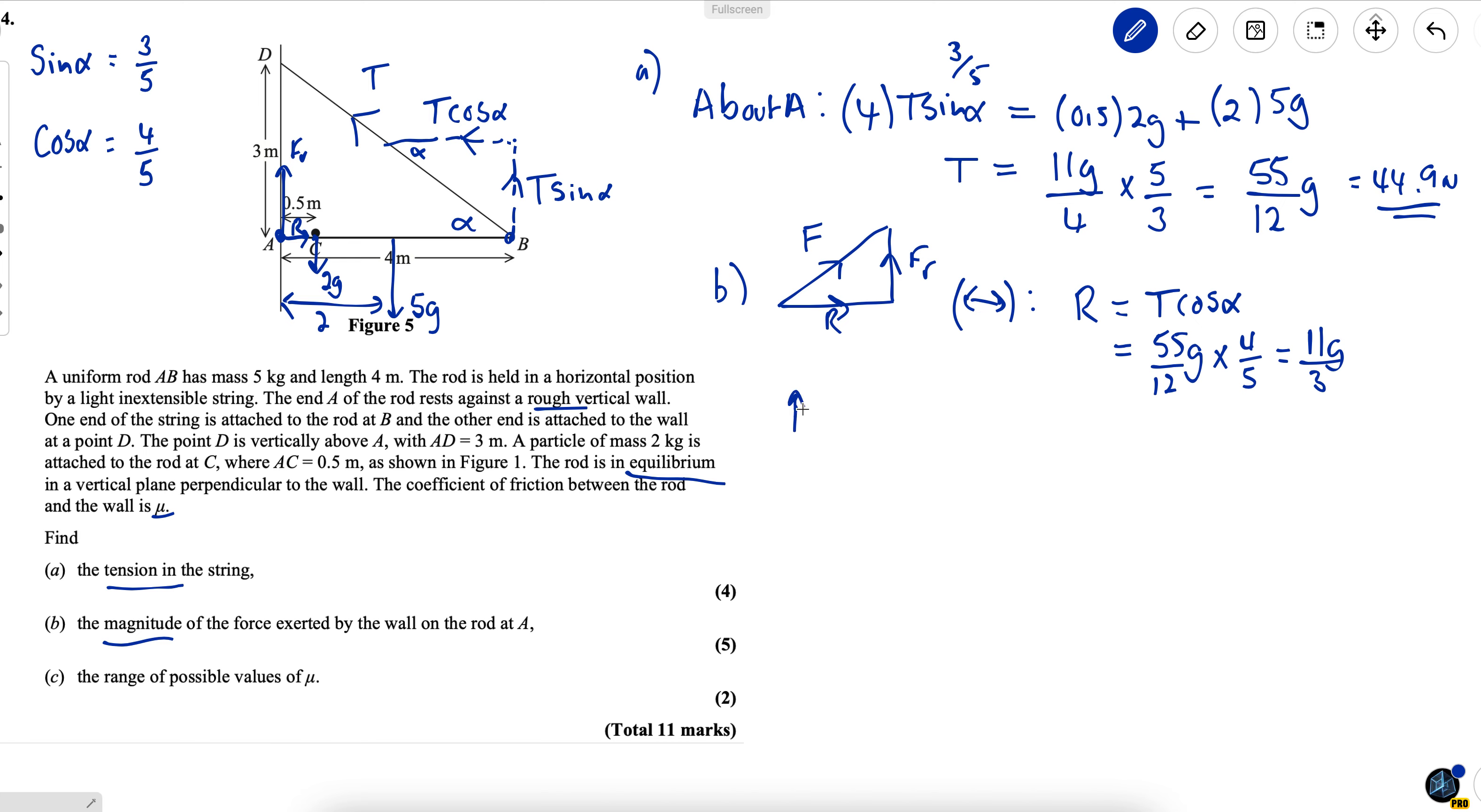If I resolve vertically that will enable me to find the value of friction because I have all of the other values. I have friction and T sine alpha going up equals 2 G plus 5 G going down. So that means friction is equal to 7 G minus 55 over 12 G multiplied by sine alpha which equals 17 over 4 G.